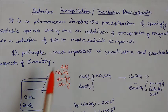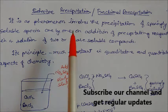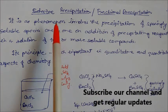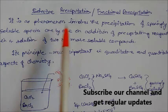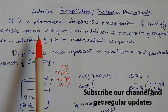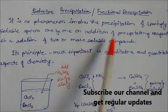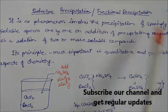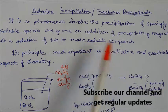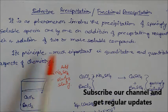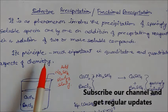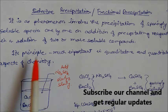What is the meaning of selective precipitation? It has another name: fractional precipitation. It is a phenomenon that involves the precipitation of a sparingly soluble species one by one on addition of a precipitating agent in a solution of two or more soluble compounds. This principle is very important in qualitative and quantitative aspects of chemistry.